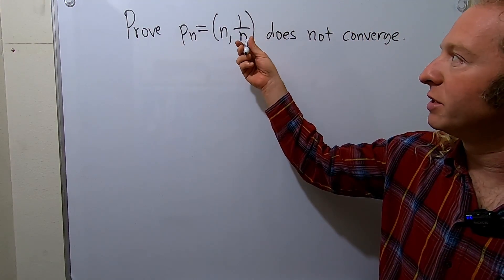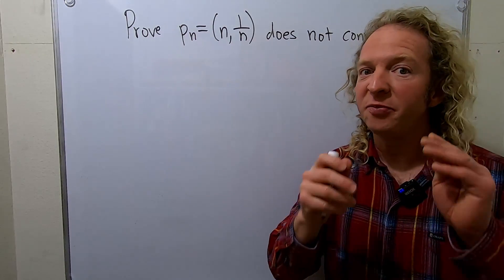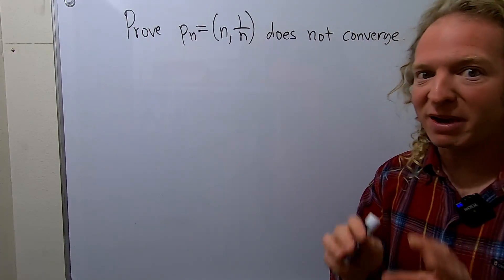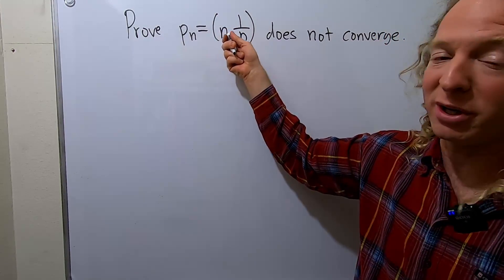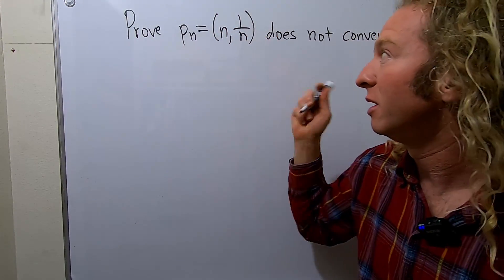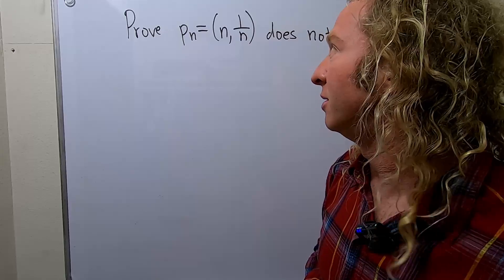Notice this is a sequence in the plane. It's not just like a sub n equals n or a sub n equals n squared. It's a point. It's an x and a y. This is your first component and this is your second component.